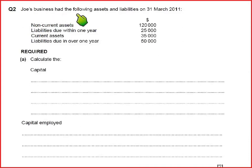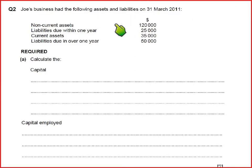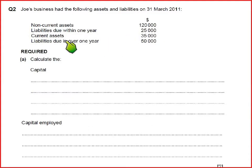Joe's business had the following assets and liabilities as on 31st March 2011, so Joe's year ends on 31st March. We have non-current assets, liabilities due within one year which are current liabilities, current assets, and liabilities due over one year which are non-current liabilities.